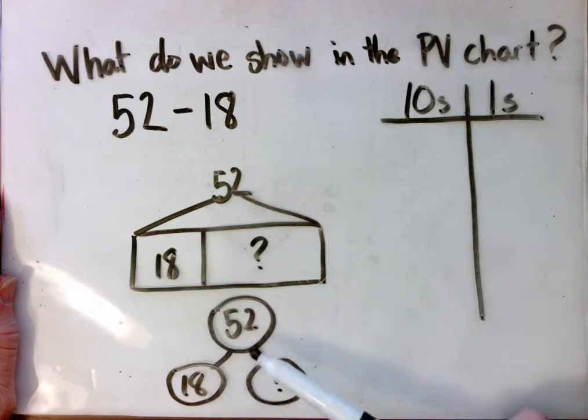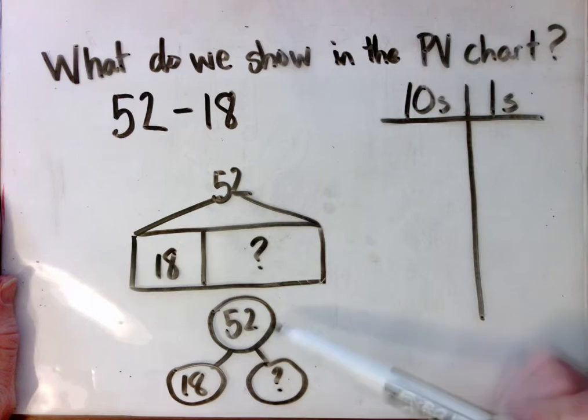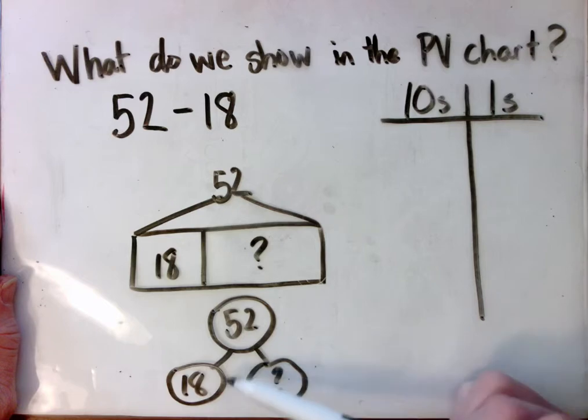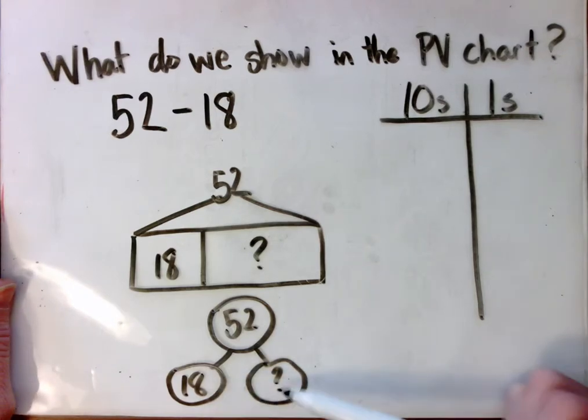Or in a number bond, 52, here's our whole. It's made of 18 and something else. We need to take away the 18 to find what else is there.